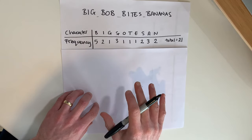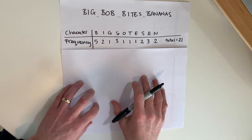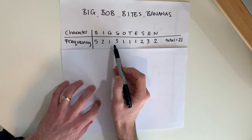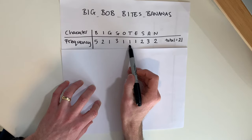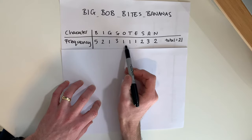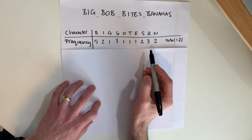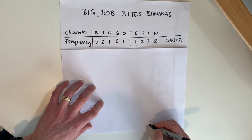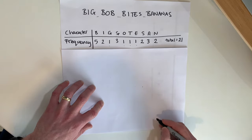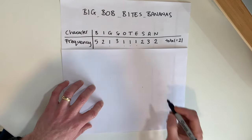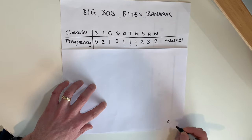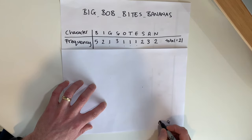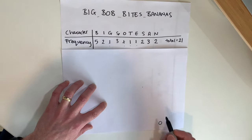Now that we've got our character frequencies, we can start building our Huffman tree. We start by looking through the chart and finding the items with the lowest frequencies first. G, O, T, and E all have the lowest frequencies, so we're going to write those at the bottom of our tree. We start bottom-up, so we start in the bottom right: we've got a G, an O, and a T.